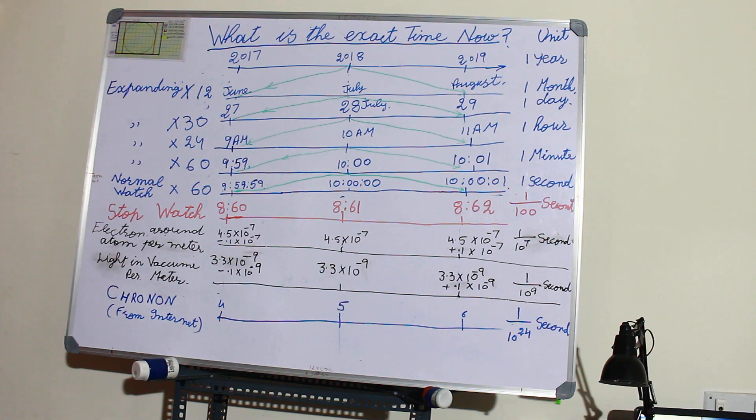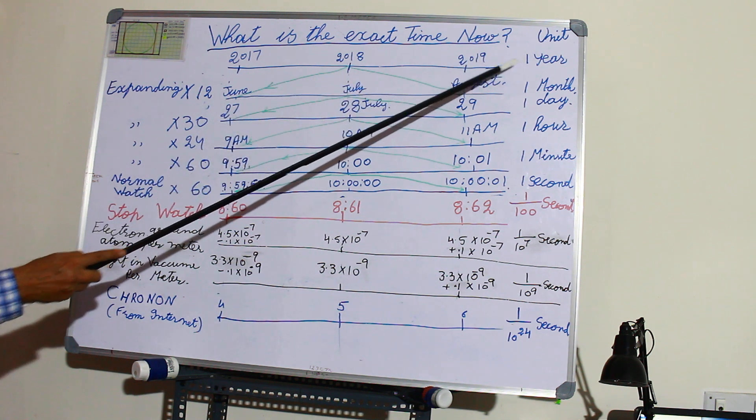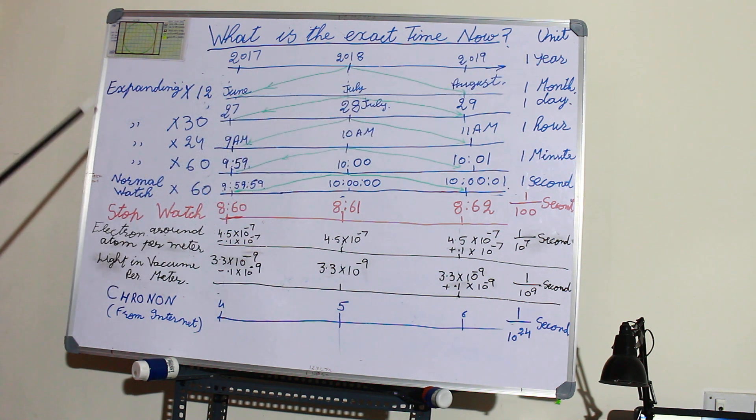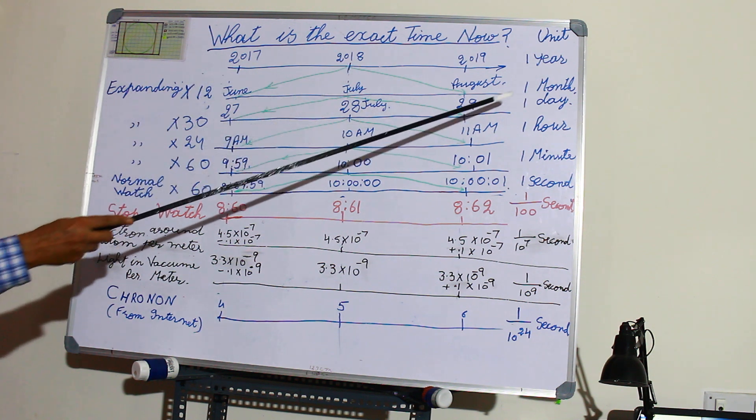Let us put the time and durations on a timeline. First of all, years. Now we expand or magnify this line. Next comes months, then days.